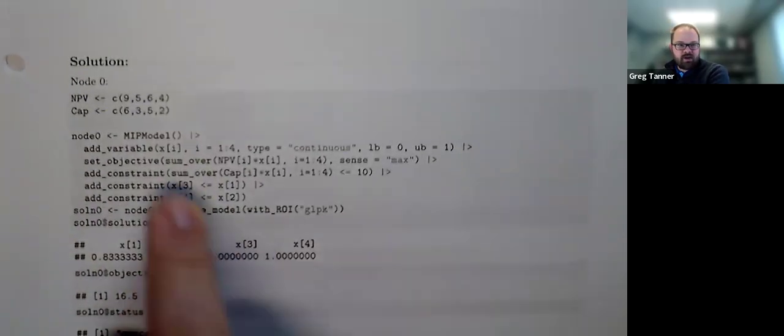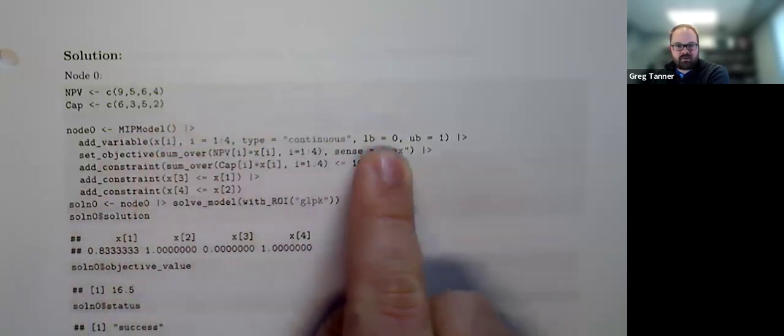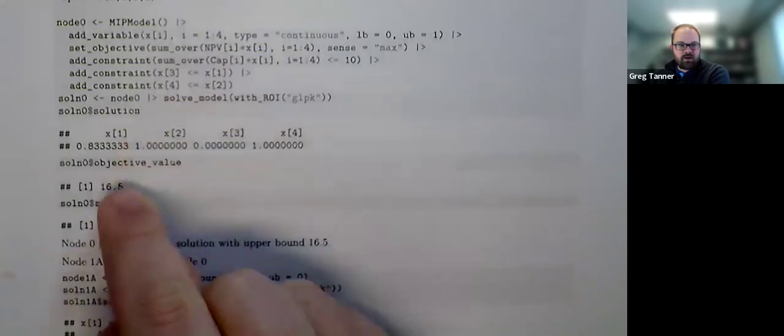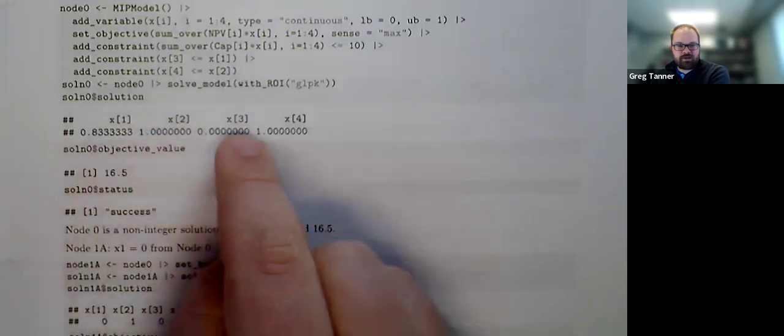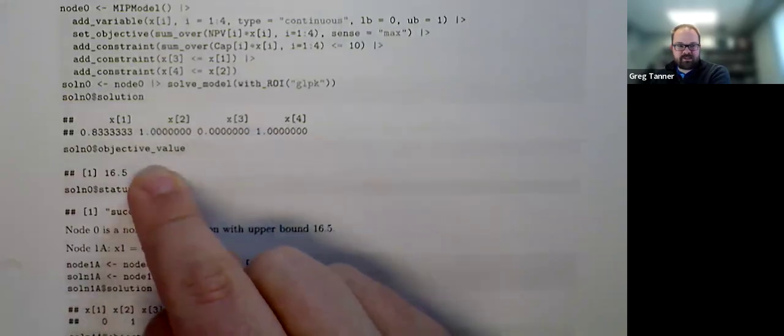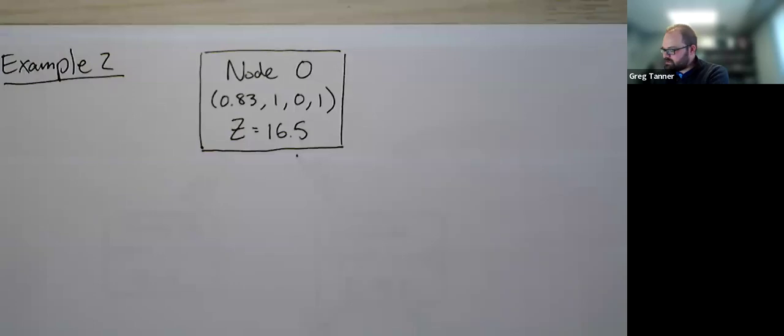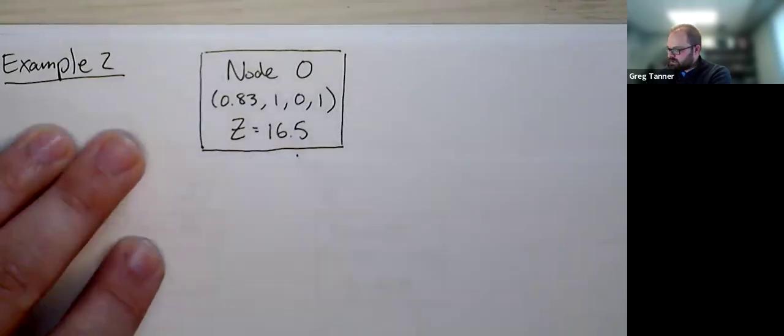So this is going to be node zero and setting that up here. Node zero, we set up the problem. We're going to let each of those x variables be continuous with lower bound zero, upper bound one. And then here are each of those constraints. Solving it out, we get a solution of 0.83 for x1, 1, 0, and 1. So not an integer solution. An objective value of 16.5 and success. So we actually do have feasible solutions. Looking at our node diagram, that's the node zero with its solution and its objective value of 16.5.